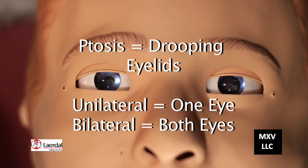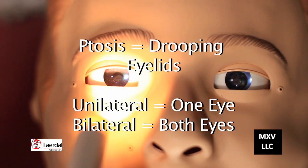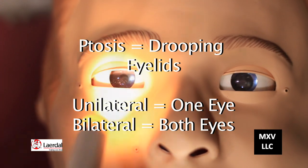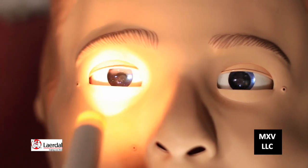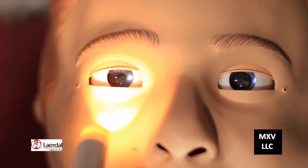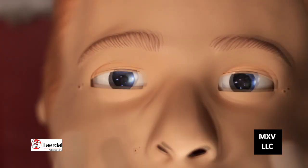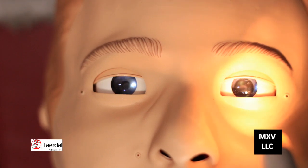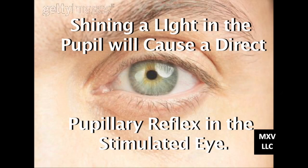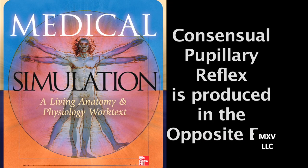This exercise allows the observation of unilateral and bilateral ptosis, and observing the pupils for size — pinpoint or fully dilated. Observe the direct response and the consensual response. When you shine a light into a pupil, a direct pupillary reflex is produced in the eye that is stimulated. A consensual pupillary light reflex is produced in the opposite eye.